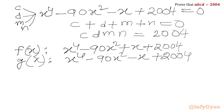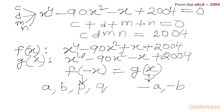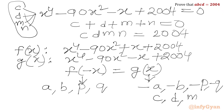Now notice that if we replace X with -X in F(x), we get exactly G(x). So F(-x) = G(x). This means all four roots of G(x) are simply the negatives of the roots of F(x). The roots of F(x) are A, B, P, Q, so the roots of G(x) are -A, -B, -P, -Q. Since the roots of G(x) are also C, D, M, N, we can equate: -P = C and -Q = D.